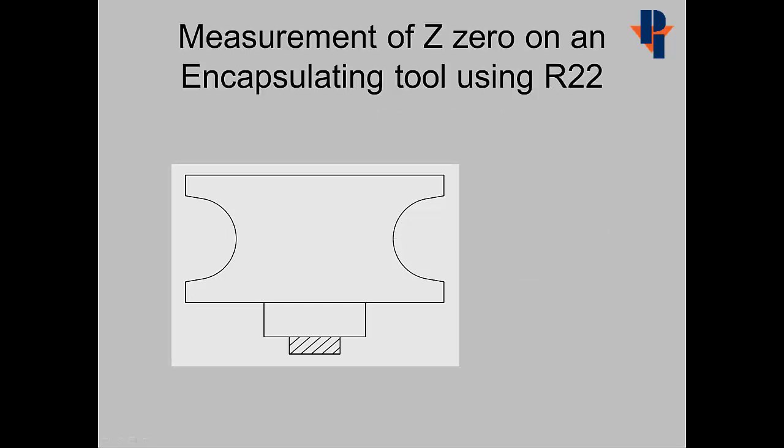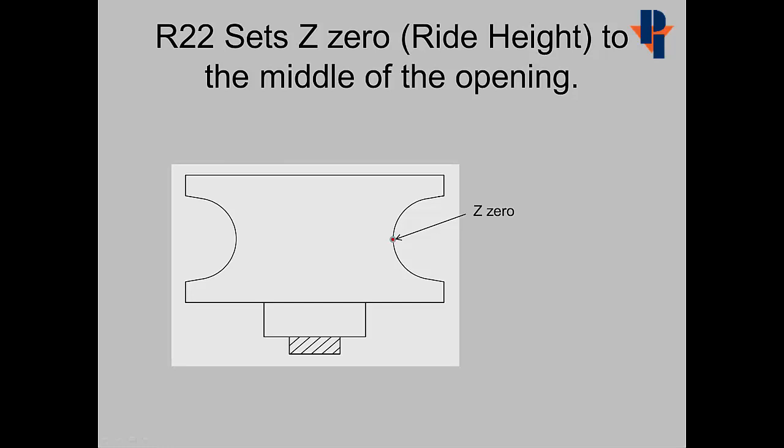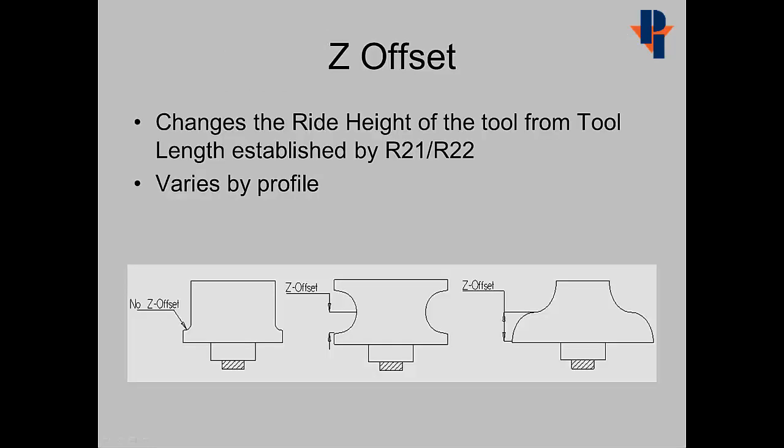When using R22 to measure a tool, it measures the entire opening of the tool. This sets the Z zero, or the ride height, to the middle of the opening. Because the ride height is not at the desired location, we again have the need to use a Z offset.